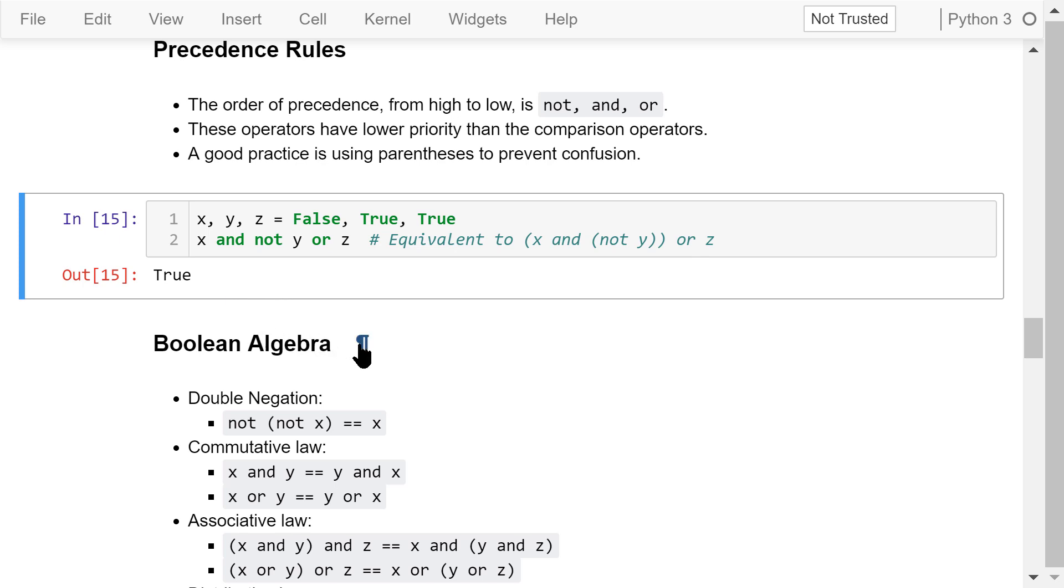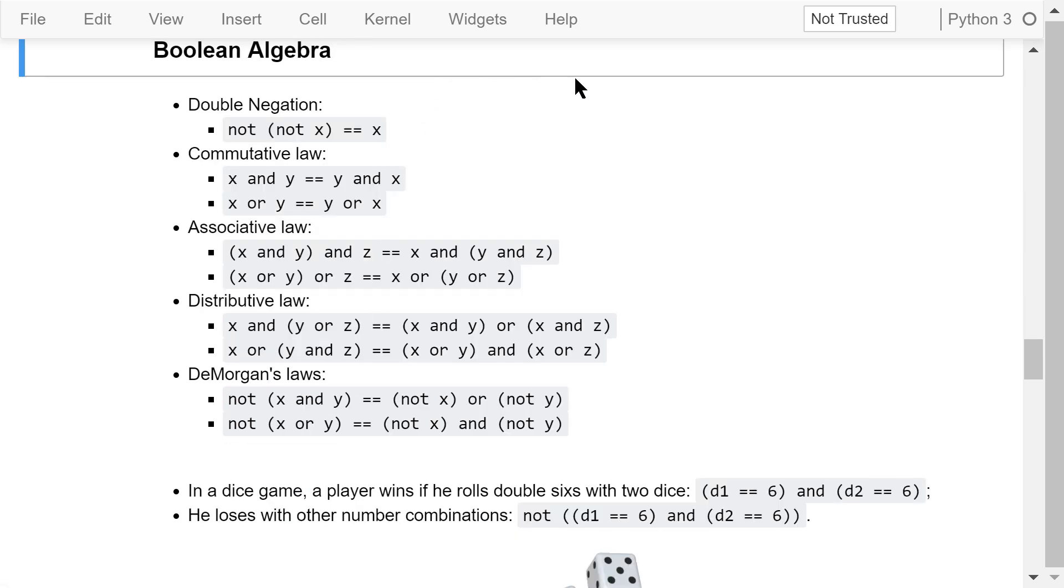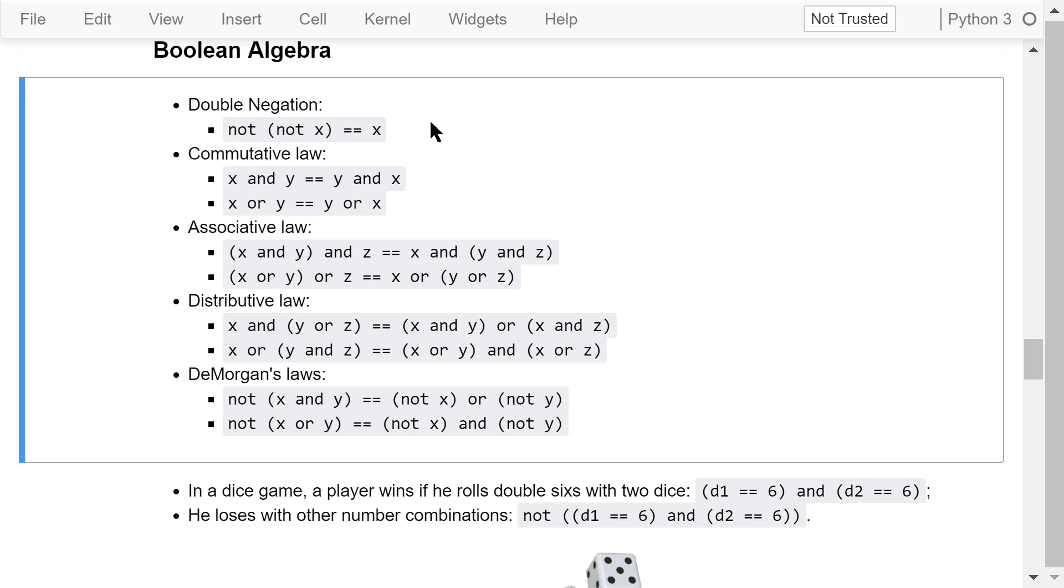Sometimes, the following Boolean algebra laws can be used to simplify Boolean expressions. The first one is the double negation law. Double NOT will cancel out, so NOT NOT x is just x. The second one is the commutative law. x and y is equivalent to y and x. x or y is equivalent to y or x.